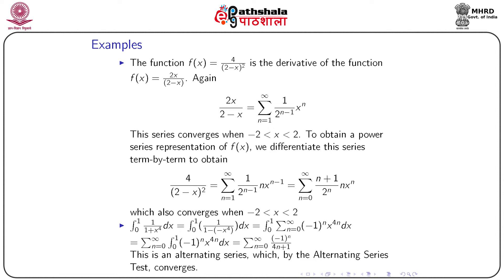As an example of term-by-term integration: suppose we need to evaluate ∫₀¹ 1/(1+x⁴) dx. Simple calculus cannot easily solve this. Using the geometric series, we write 1/(1+x⁴) = Σ_{n=0}^∞ (−1)ⁿ x^(4n). Then ∫₀¹ 1/(1+x⁴) dx = Σ_{n=0}^∞ ∫₀¹ (−1)ⁿ x^(4n) dx = Σ_{n=0}^∞ (−1)ⁿ/(4n+1), which is an alternating series that converges by the alternating series test.